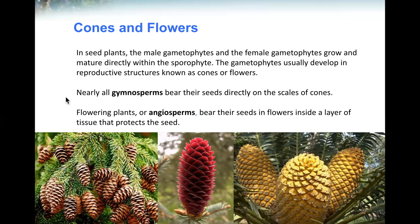Nearly all gymnosperms bear their seeds directly on the scales of the cones. Flowering plants, the angiosperms, bear their seeds in flowers instead of within a layer of tissue that protects their seed, like in a cone. So gymnosperms are cones, and angiosperms are flowers.